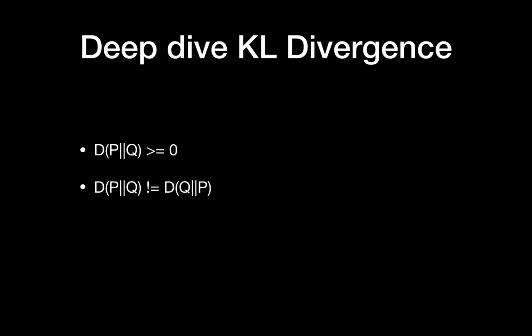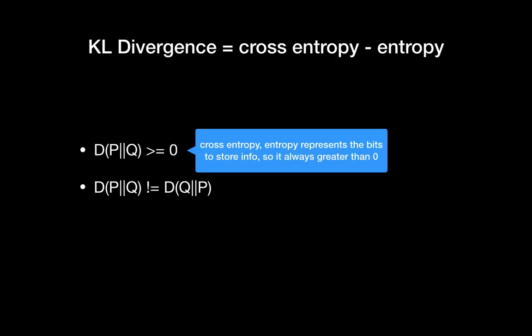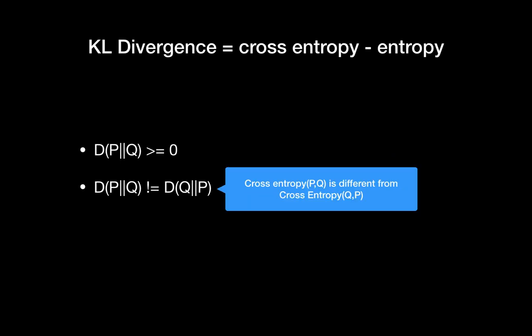There are two more key features of KL divergence. First, KL divergence always has a value of 0 or greater than 0. This is because cross entropy and entropy always have values of 0 or greater. Secondly, KL divergence is asymmetric. This is also because cross entropy H(P, Q) is different from cross entropy H(Q, P).